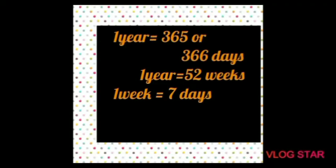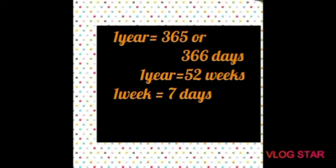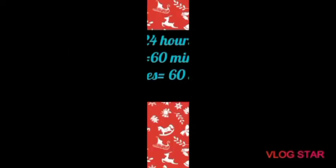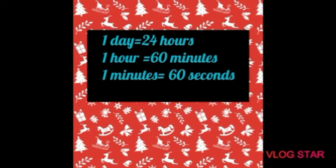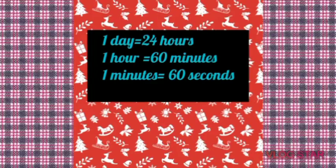In one year we have 365 or 366 days, which is equal to 52 weeks, and one week is equal to 7 days. One day is equal to 24 hours, one hour is equal to 60 minutes, and one minute is equal to 60 seconds.